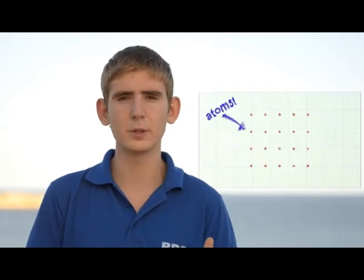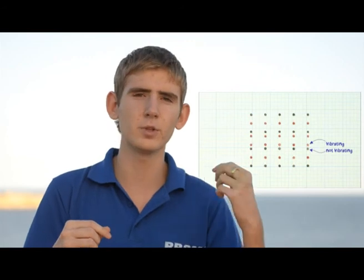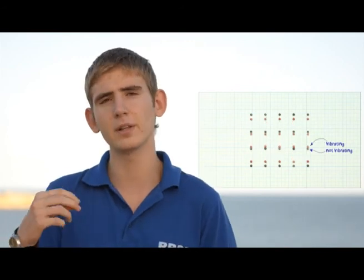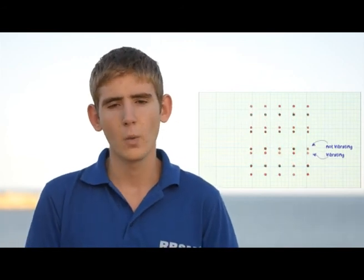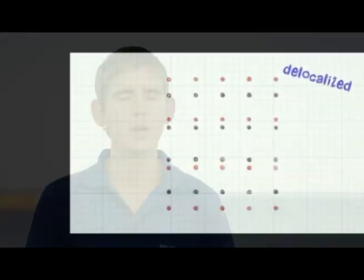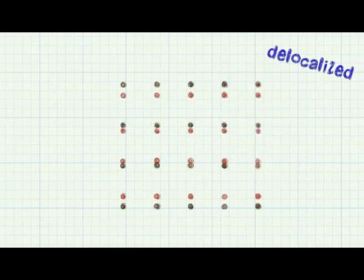Imagine that the difference between this small particle called a quant and this chunk of metal is the same as the difference between this chunk of metal and you. So if this piece of metal can be in two different places, then why not you? I wish you to learn physics and discover how amazing the world around us is.